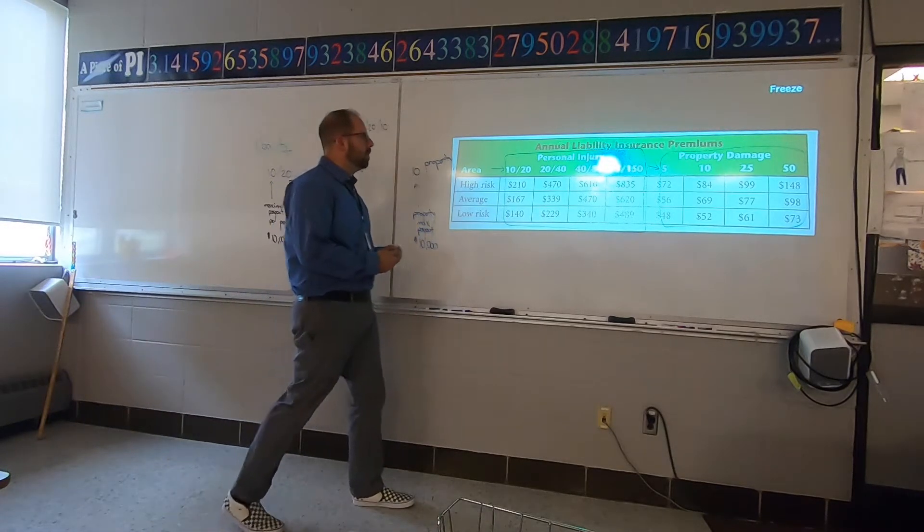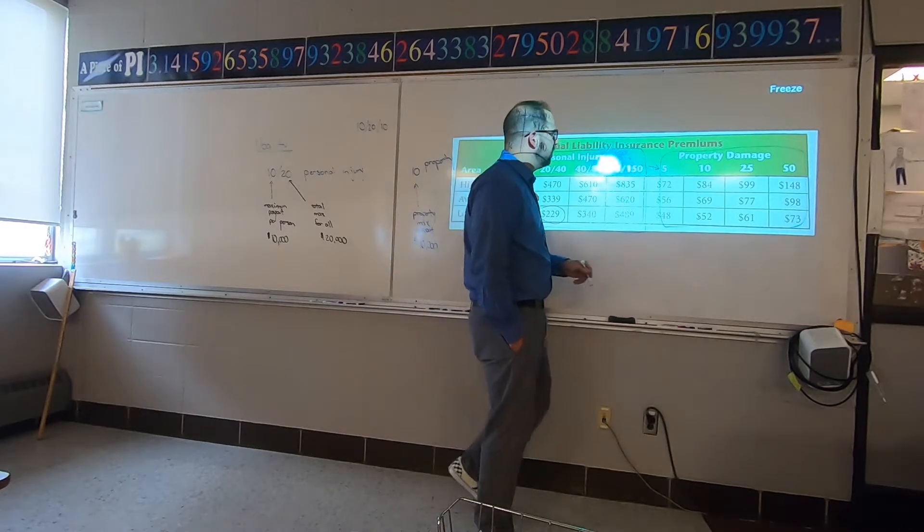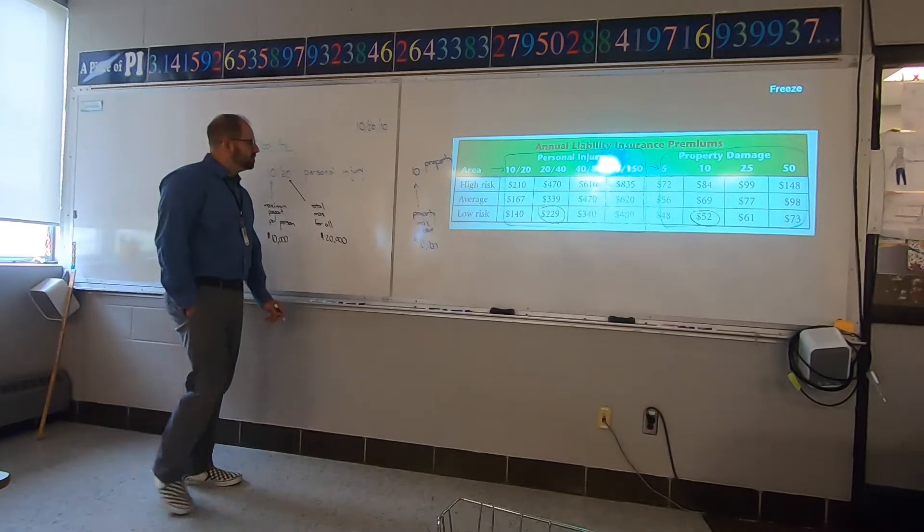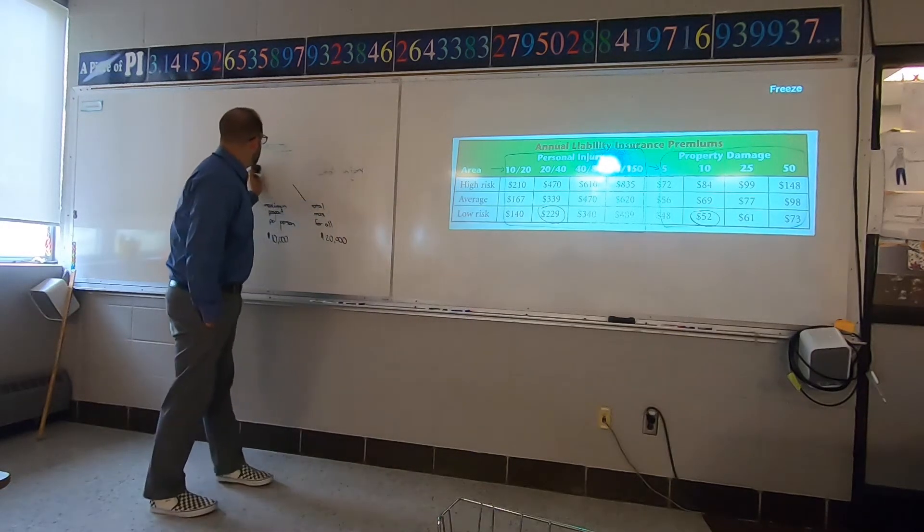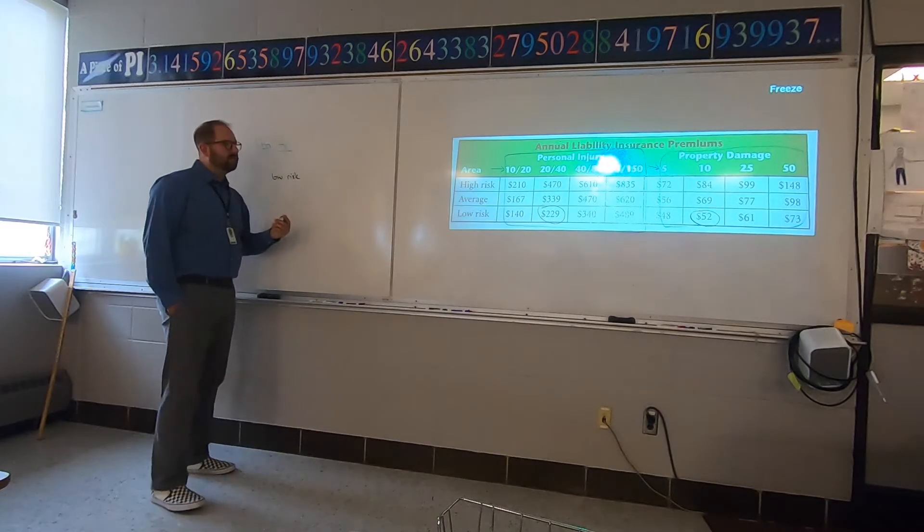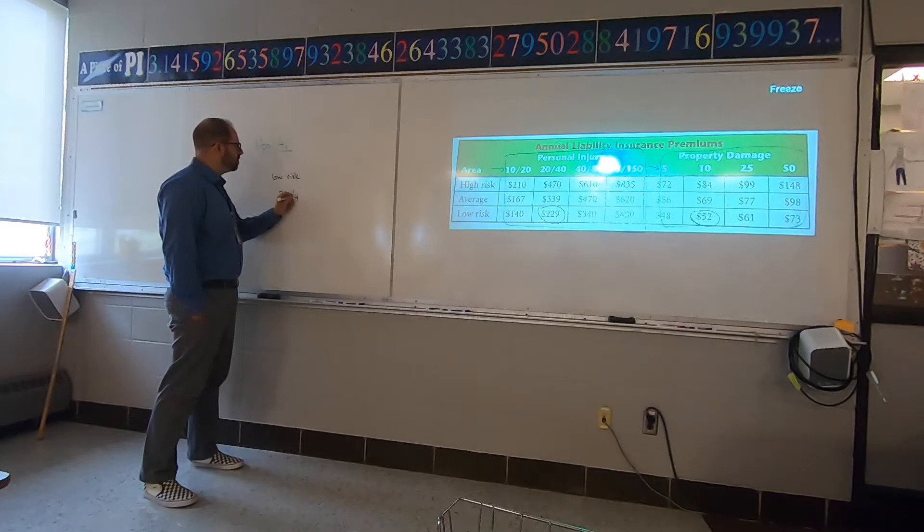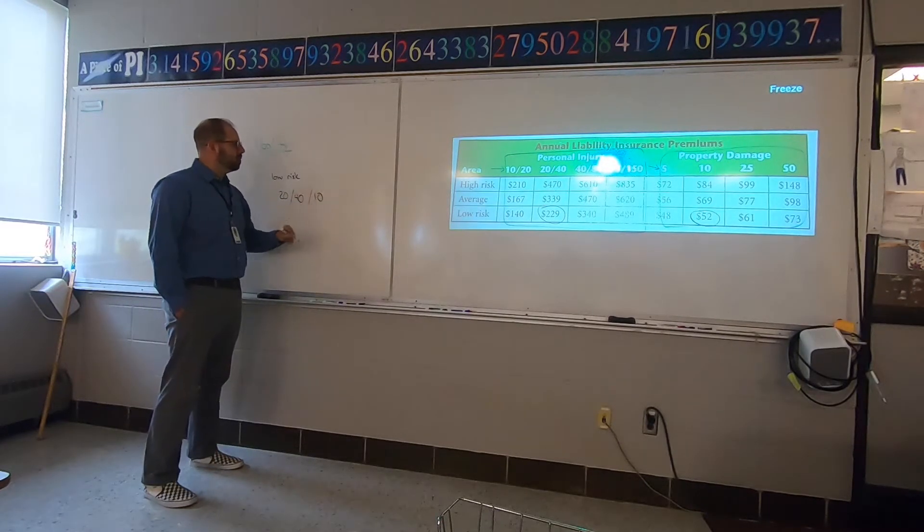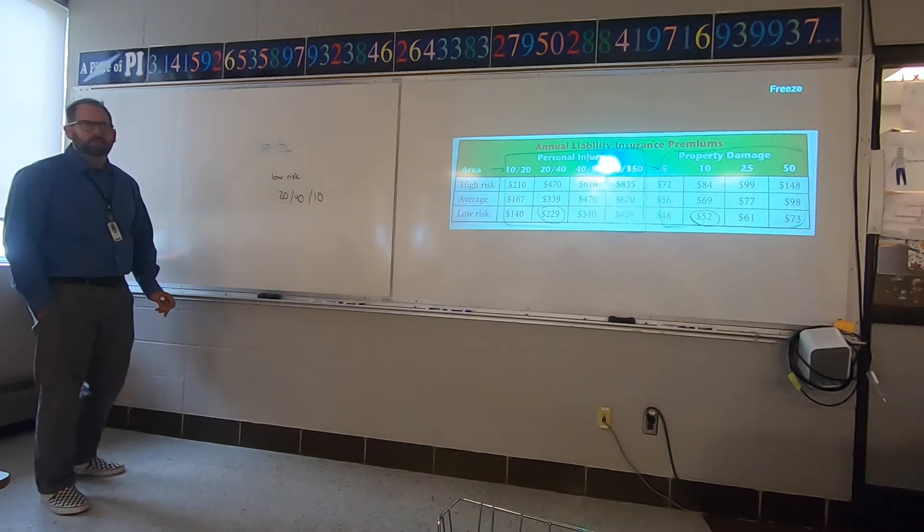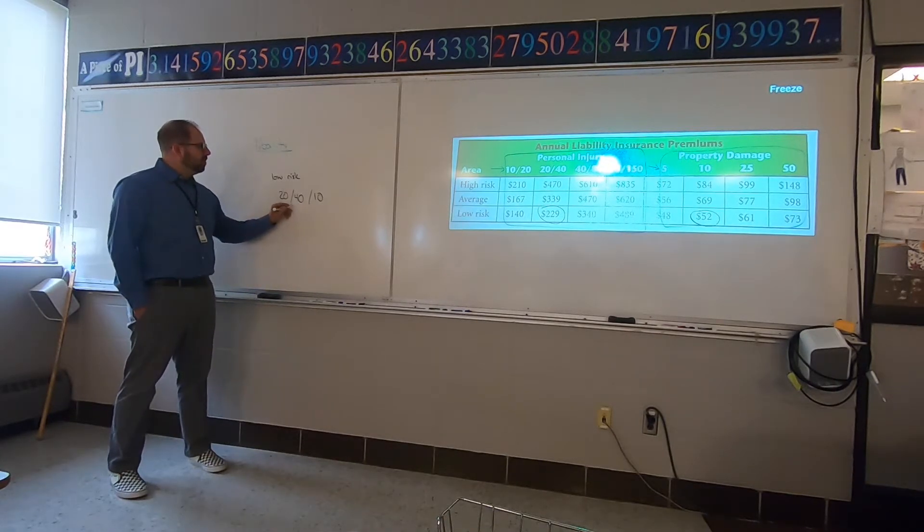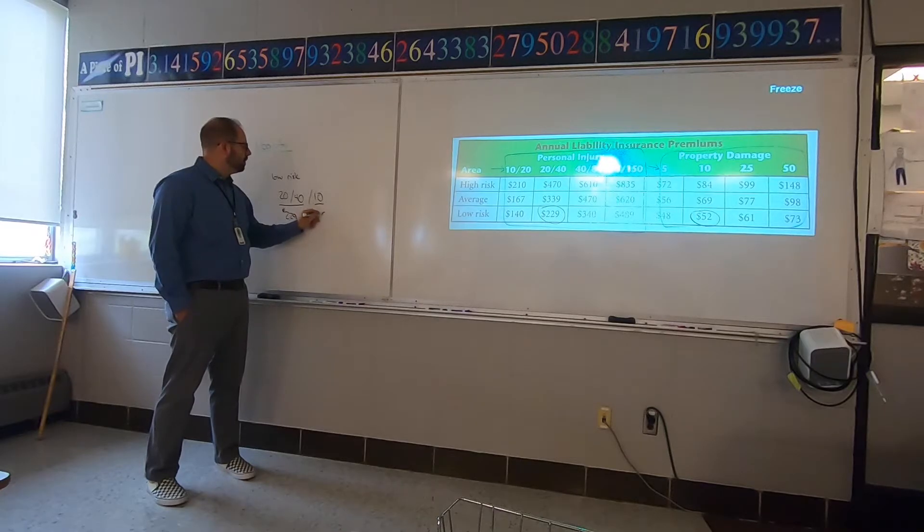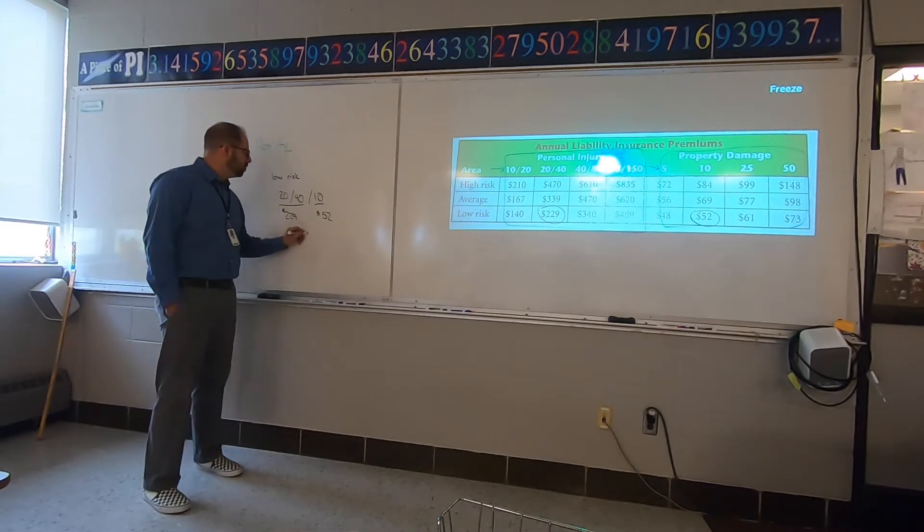Around here we're pretty much average to below. There's not really a lot here in Garner. So you can probably see low insurance. Let's say you're going for the 20/40 coverage and you're going for the $10,000 coverage for property. So this is your premiums that you're picking. You are picking the low risk or maybe that's what the insurance company picked for you. You pick low risk, then they offered, do you want the 20/40. You pick the 20/40 coverage for personal injury.